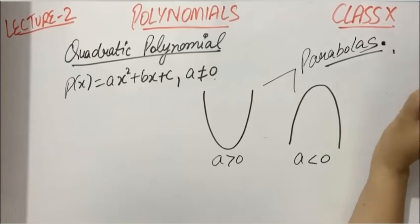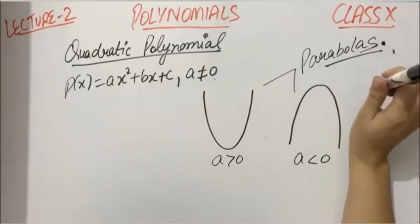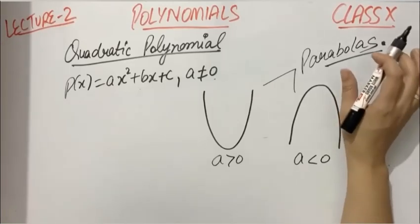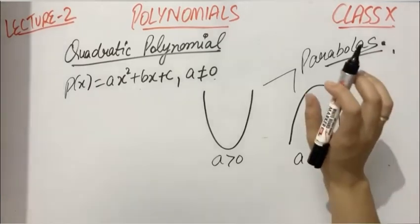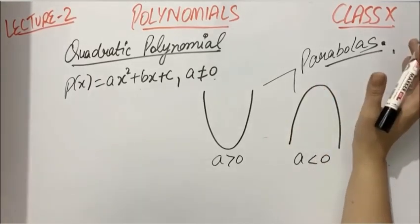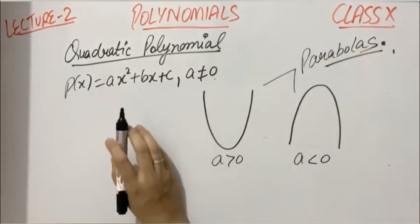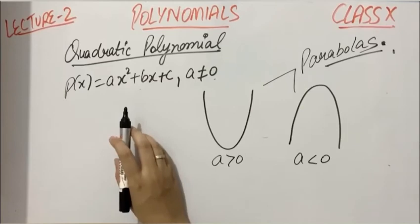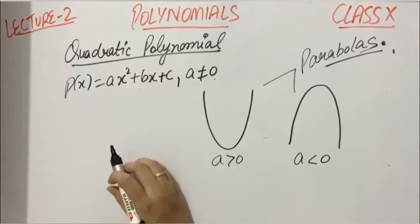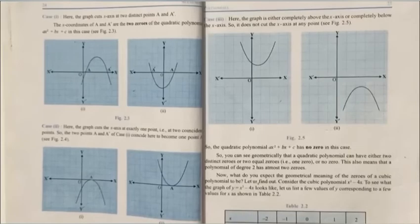For parabolas and quadratic polynomials, there are three possibilities. You won't be given plotting or graphing in Class 10th. You need to understand the concept of zeros, okay? So I'll explain that to you directly from the books.